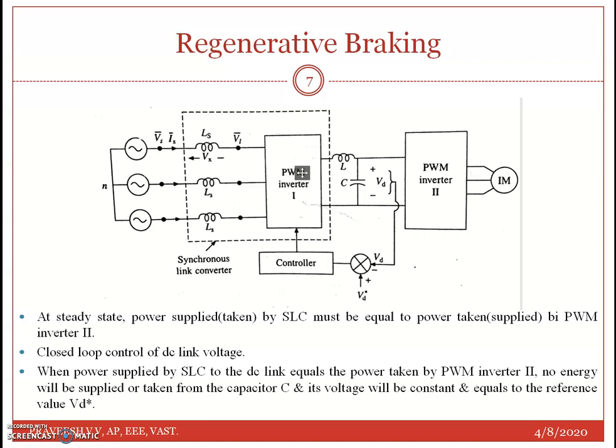When AC source voltage falls, the closed loop voltage control maintains the DC link voltage by increasing IS. If IS adjusts, then motoring continues to provide constant voltage and therefore produces the same maximum power and torque, up to a safe value of IS.